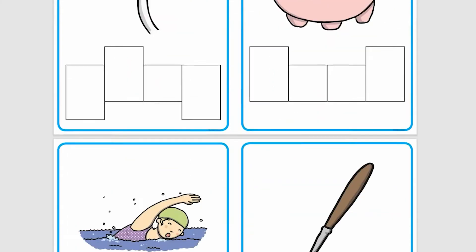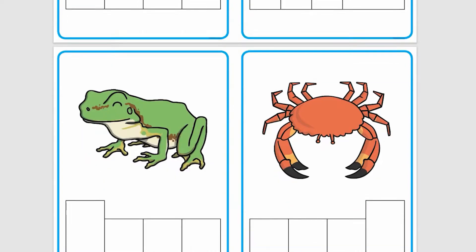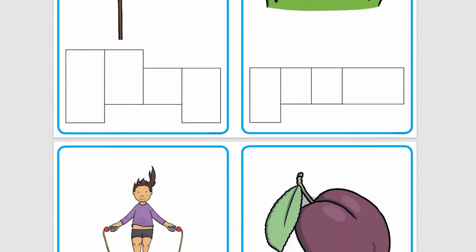A phoneme frame makes it easier for children to listen to the number of sounds in a word. It separates a word into boxes to match the number of sounds that can be heard in the word.